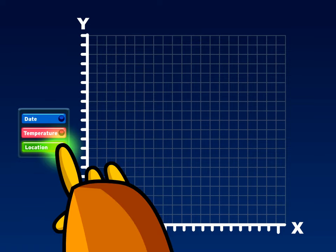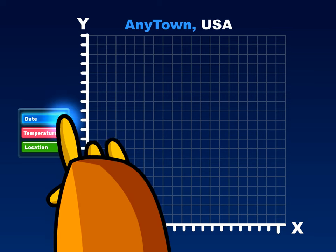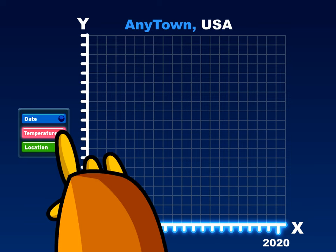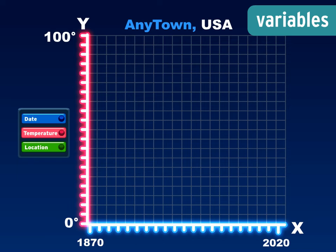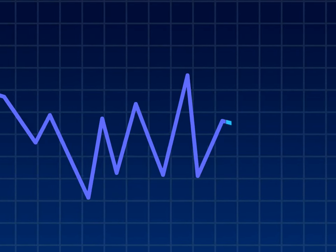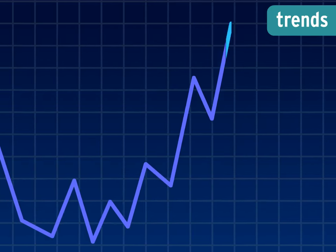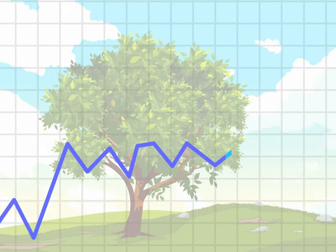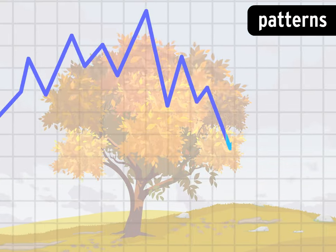Say your question is: how have local temperatures changed over the past 150 years? You can plot the data on a line graph with dates on the x-axis and temperature on the y-axis. For this question, those are the two variables — the conditions that can change. Line graphs are particularly useful for understanding how things change over time. They show trends, like whether something increases, decreases, or stays about the same. And they can reveal patterns, like that temperature rises every spring and drops every fall.